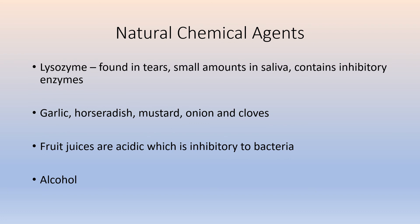In terms of some natural chemical agents: lysozyme is found in your tears and in small amounts in your saliva. It has enzymes that are inhibitory, helping to prevent infection. Garlic, horseradish, and onions — some of these different natural foods also have some inhibitory properties to them.